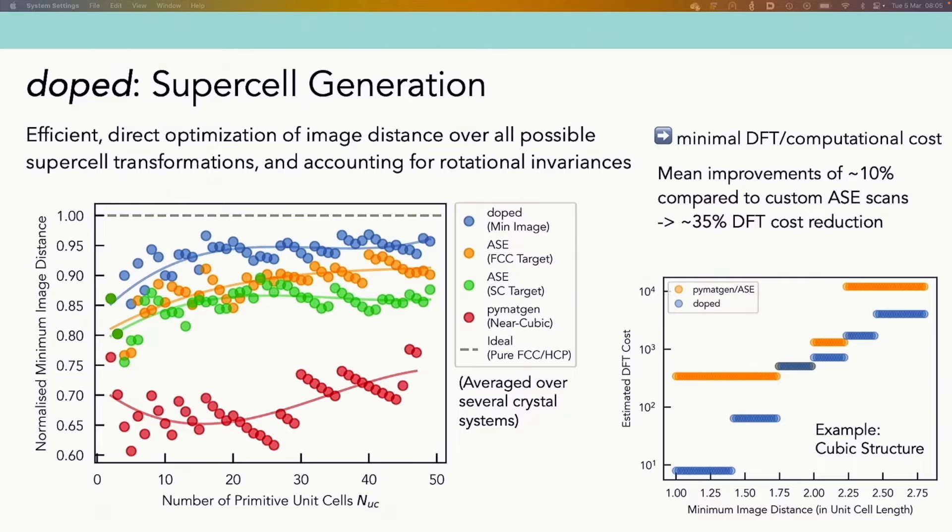If we compare it to some other functions that are available in the literature from either PyMatGen or ASE, we can see that we're getting quite a significant improvement in the minimum image distance we're obtaining for a given number of unit cells. I would note that the ASE functions here are not exactly very user-friendly and they kind of require a custom implementation of scanning over multiple possible inputs to then find the best output for these. So if we average this over a range of different crystal systems as it's done here, we're getting mean improvements that come out to this custom ASE scans of around 10%, which in DFT cost would translate to somewhere around 35%, which is a significant improvement in the efficiency for every supercell calculation that you're doing in your defect investigation.